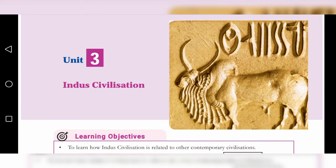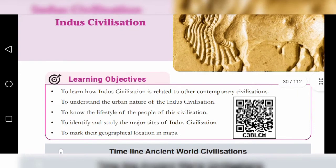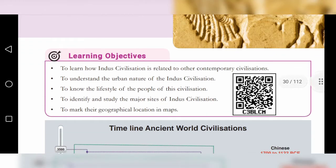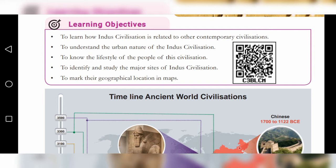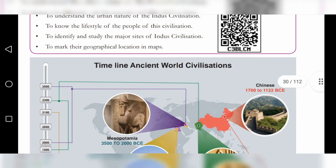Before we start the lesson, we have to see the learning objectives. First, to learn how the Indus Civilization is related to other contemporary civilizations. Second, to understand the urban nature of the Indus Civilization. Third, to know the lifestyle of the people of this civilization. Fourth, to identify and study the major sites of the Indus Civilization. Last, to make their geographical location in maps.